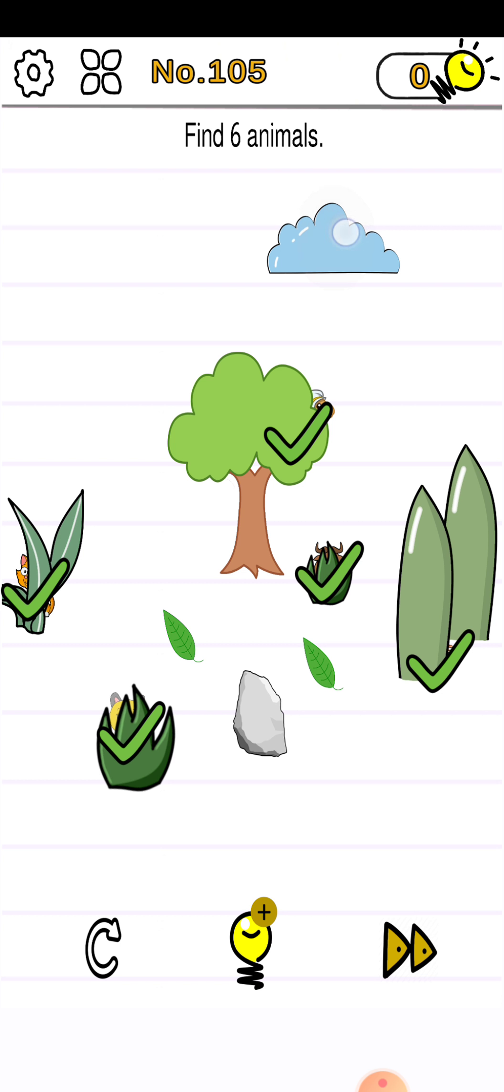Now press your finger on the cloud multiple times so that rain will start, and in the rain you can see snake come out. So press your finger on the snake and this is the sixth animal.